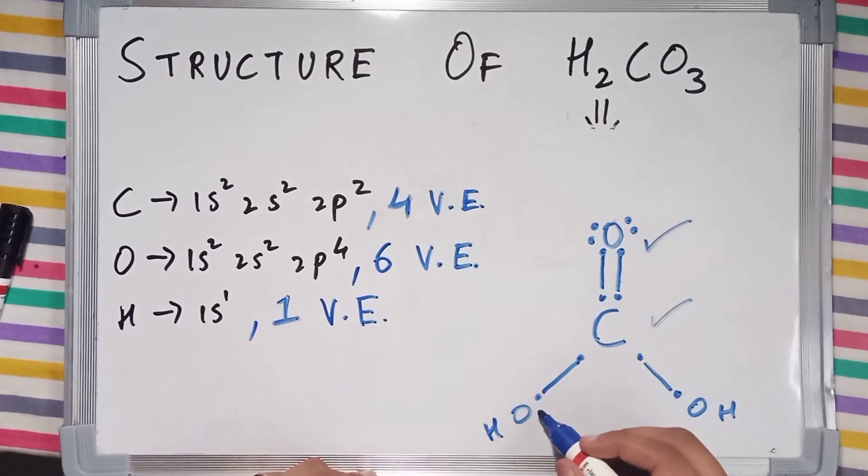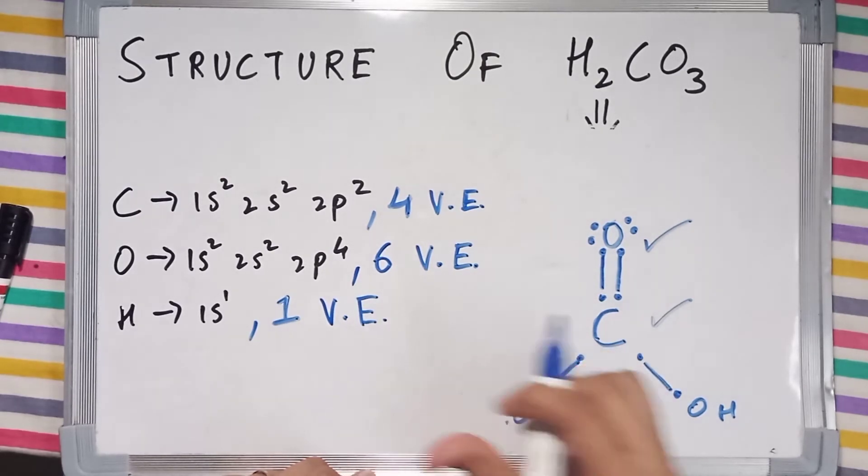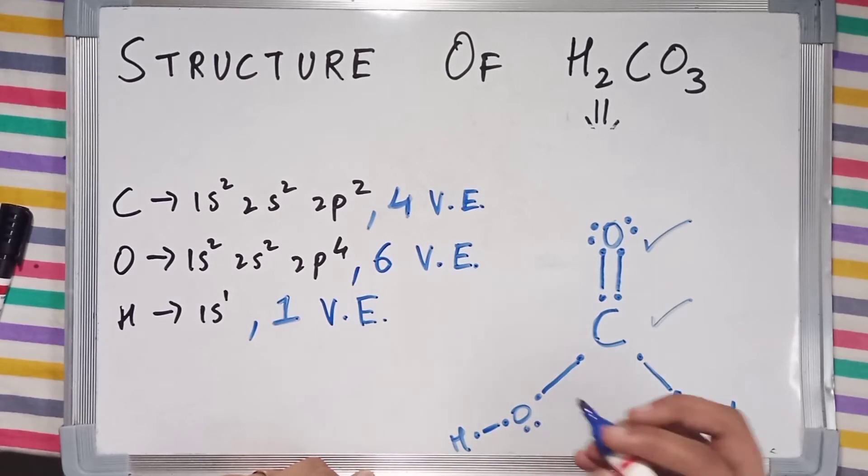Similarly, oxygen here has donated an electron with hydrogen. So now oxygen has 2 lone pairs left. Let's check its valence - it has also completed its octet.